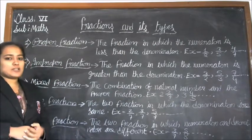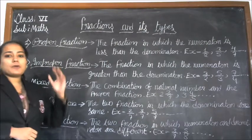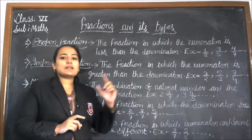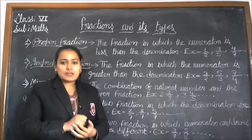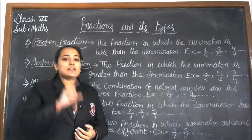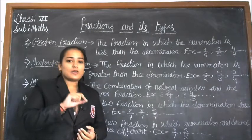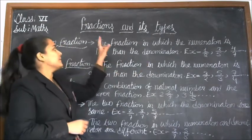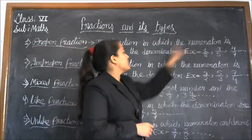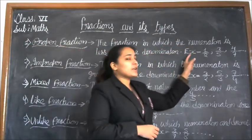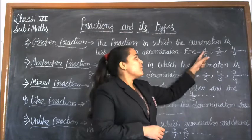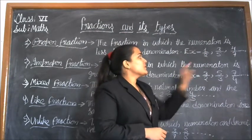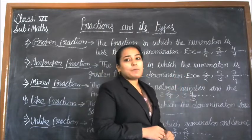The first one is proper fraction. A proper fraction is one in which the numerator is less than the denominator — the numerator is smaller than the denominator. For example: 1 upon 2, 3 upon 5, and 4 upon 7.